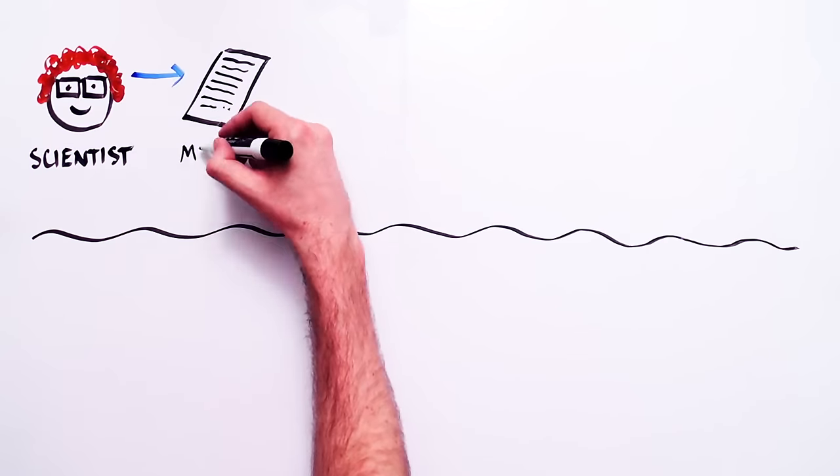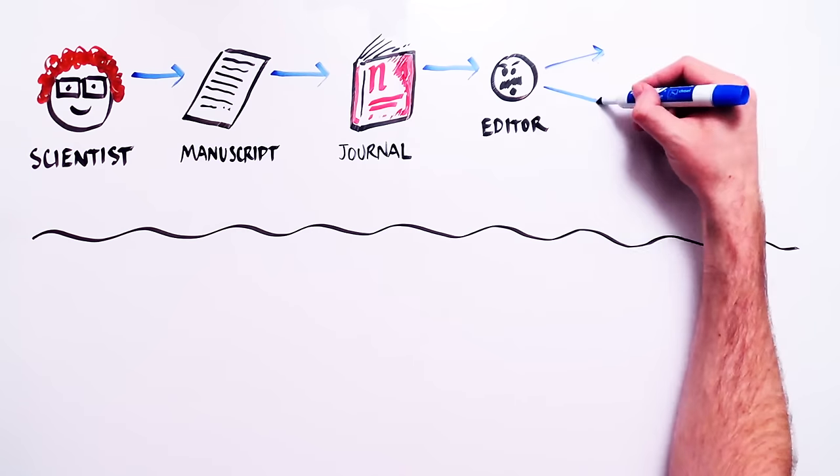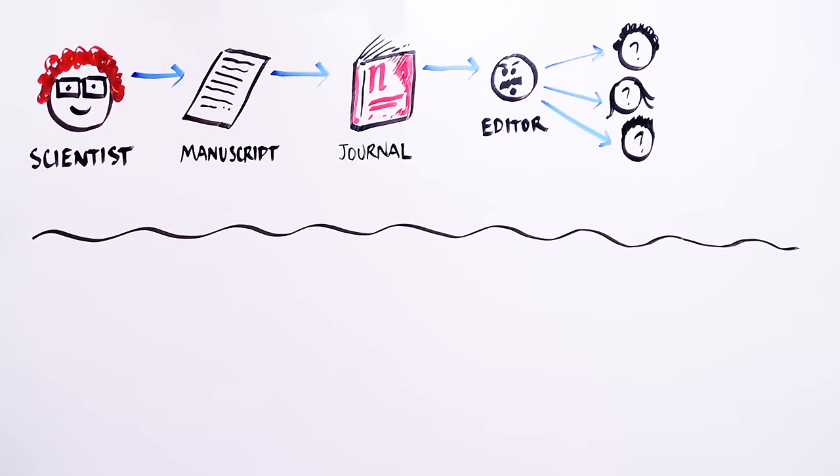Let's see how the process works. First, scientists write a manuscript and send it to a journal for consideration. If the editors are interested, it is sent out to a group of anonymous scientists for their opinion of the quality of the work.